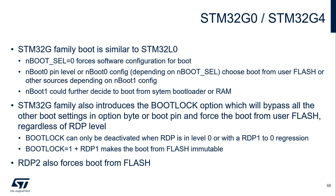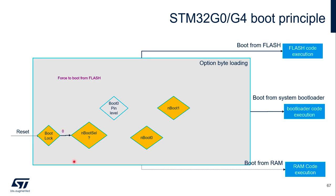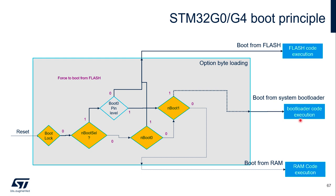On G0 and G4, similar to L5, there is the boot lock option. When not activated, the RDP mechanism is similar to L0, with the option to select the boot pin or boot0 option bit to determine whether to boot from user flash, system bootloader, or RAM depending on the boot1 option bit configuration. When boot lock is activated, the only possible boot source is user flash — the same as when RDP is set to level 2. RDP level 2 can still force boot from flash.